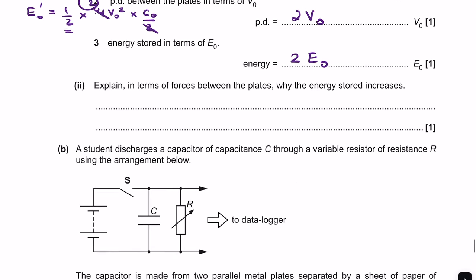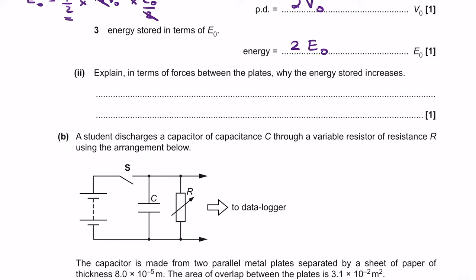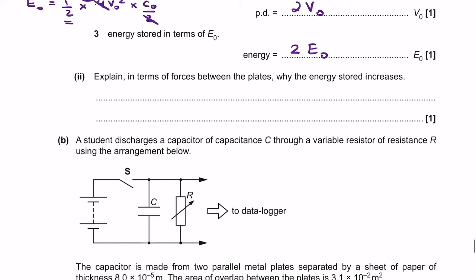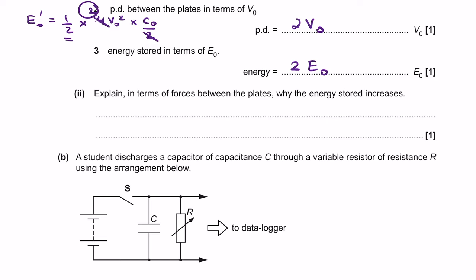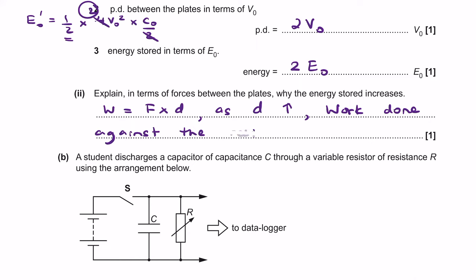Part II: the energy stored increases because, as the distance between the plates increases, work must be done against the attractive electrostatic forces between the oppositely charged plates. Since work done equals force times distance, as D increases the work done against attractive forces also increases, and this work done is stored as energy in the capacitor.